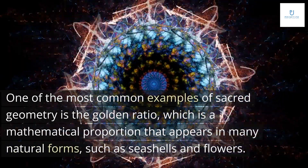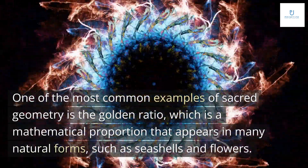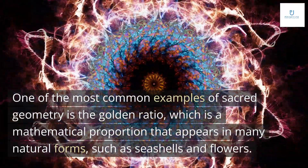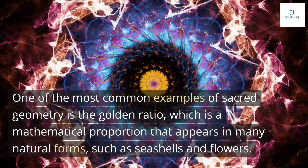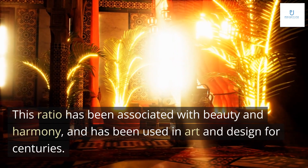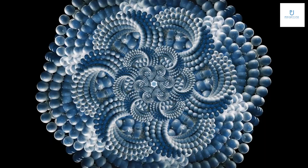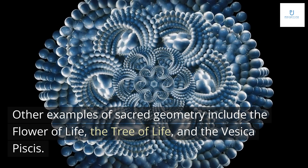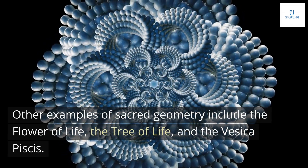One of the most common examples of sacred geometry is the golden ratio, which is a mathematical proportion that appears in many natural forms, such as seashells and flowers. This ratio has been associated with beauty and harmony, and has been used in art and design for centuries. Other examples of sacred geometry include the flower of life, the tree of life, and the vesica piscis.